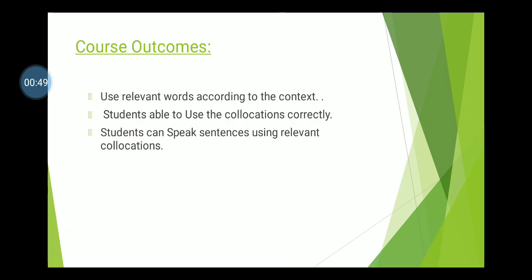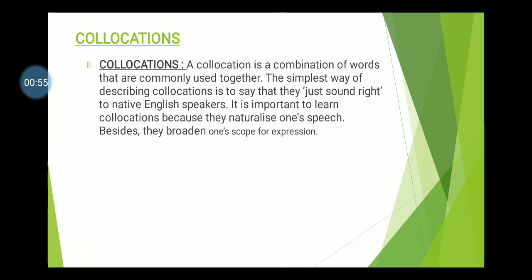Definition: A collocation is a combination of words that are commonly used together. The simplest way of describing collocations is to say that they just sound right to native English speakers. It is a sign that we are native speakers and it offers unlimited options for our scope of expression.